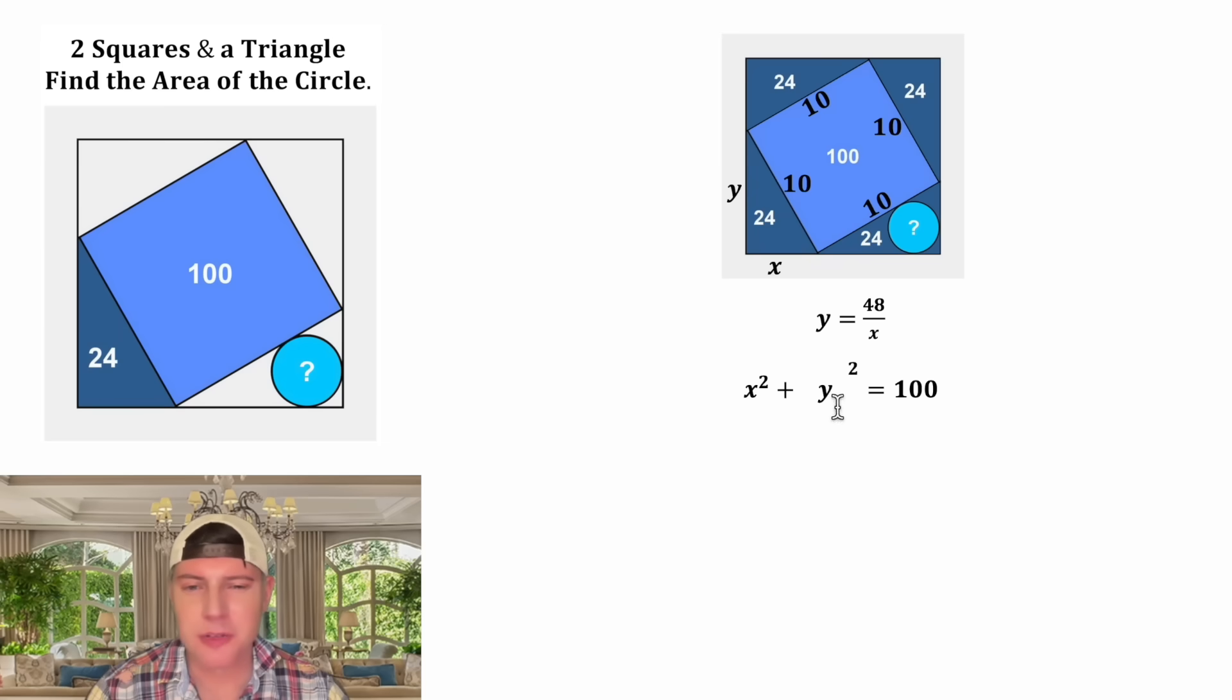And now in the place of this y we can substitute 48 over x. Now we have x squared plus 48 over x squared equals 100. Let's start right here. Anytime you have a fraction to a power, that power can distribute to both the top and the bottom. So 48 over x squared is the same thing as 48 squared over x squared, and then 48 squared is equal to 2,304.